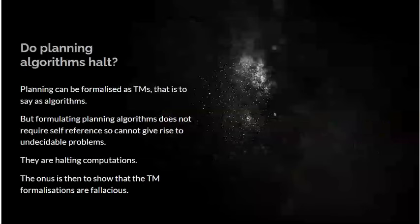Let's take planning as an example. Planning algorithms can be formulated as Turing machines. That is to say, they can be written as algorithms. But formulating a planning algorithm doesn't require self-reference. Planning algorithms don't take other planning algorithms as input. So the required self-reference that you need for undecidable problems can't arise. So planning algorithms are halting computations. The onus would be on the Austrian school to show, for example, that Kantorovich's algorithm was fallacious, or to attempt to show that Kantorovich's algorithm doesn't terminate. As far as I know, they've never succeeded in doing that.